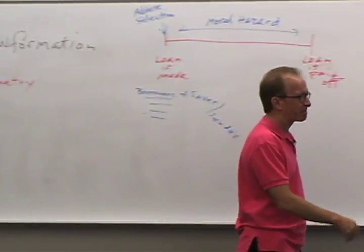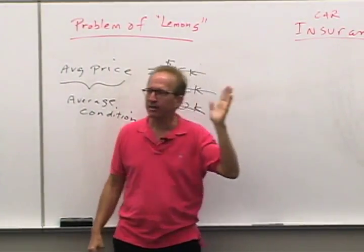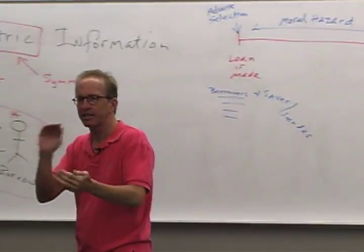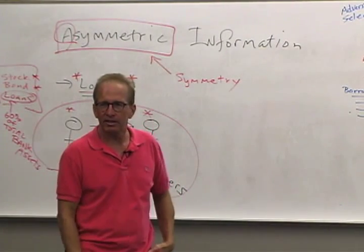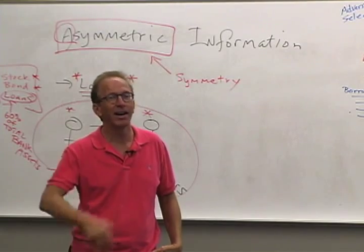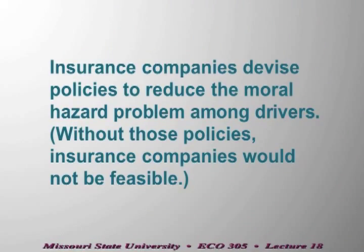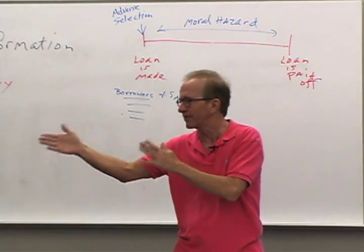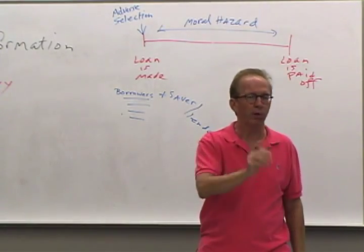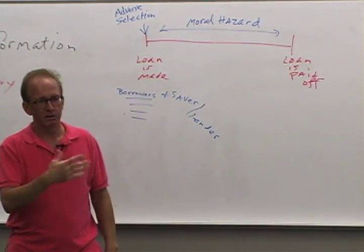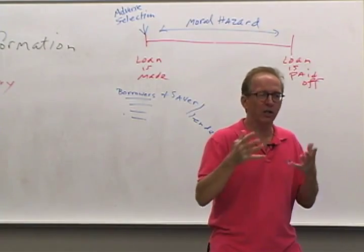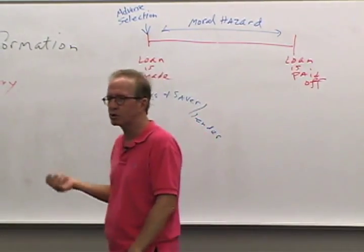Car insurance companies respond by raising premiums after a fender bender — or canceling the policy entirely. They also raise rates after speeding tickets or a DWI. What they're trying to do is place consequences back on you for behaving irresponsibly, so you don't engage in reckless actions. This is how they protect themselves against the moral hazard problem.